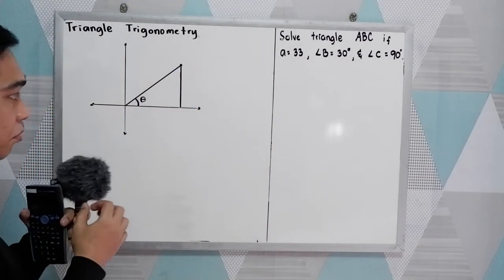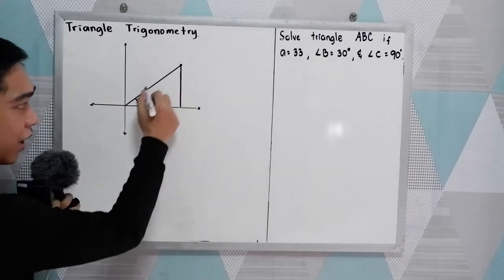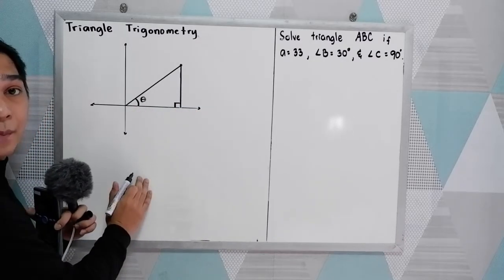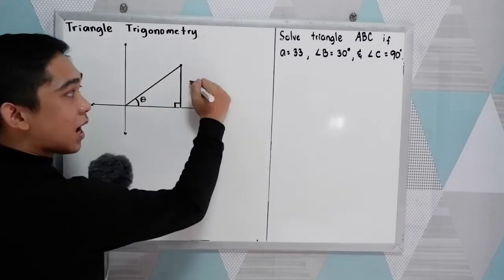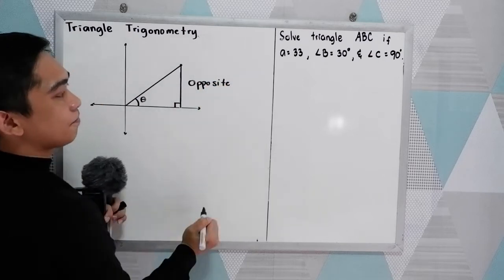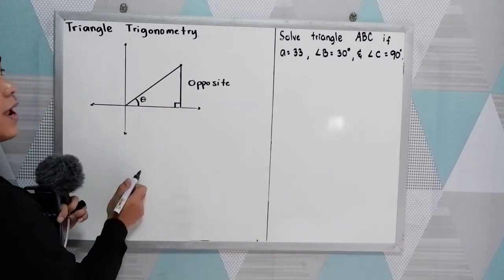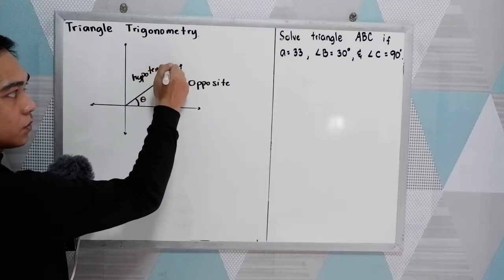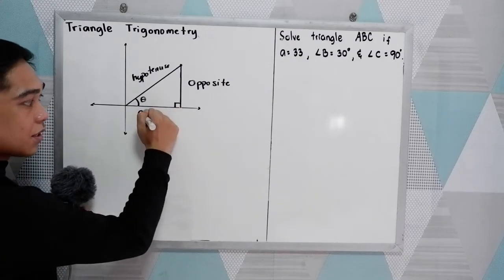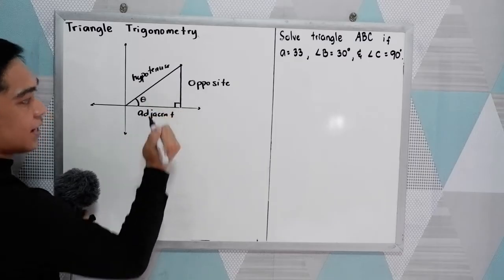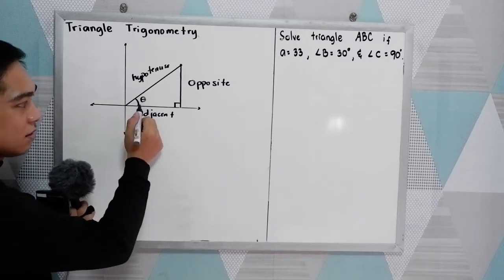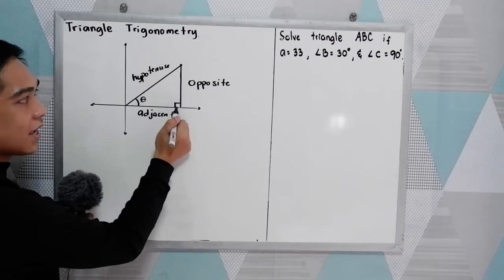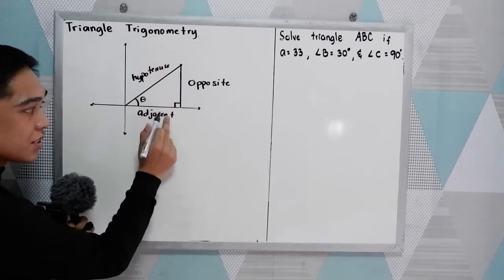Let's say we have here our right triangle. This is our 90 degree angle, and we have here our theta. Since we have the given theta, this will be our opposite side — the opposite side of theta. The longest side in our triangle is what we call the hypotenuse, and our third side is what we call the adjacent side.